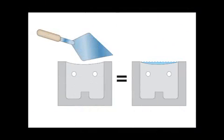Most masons screed off a bond beam or poured wall with the heel of their trowel. This can lead to a concave surface, which will lead to the ponding of water. The longer the water sits in the wall, the more damage it will cause.